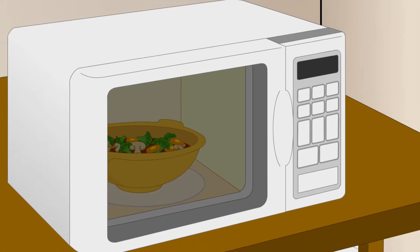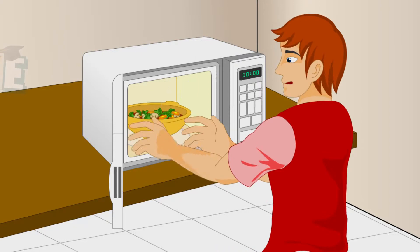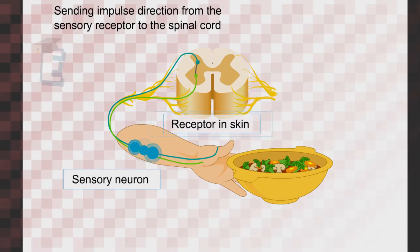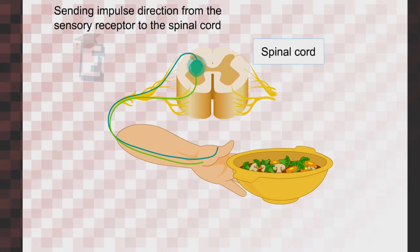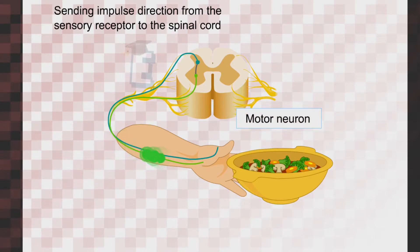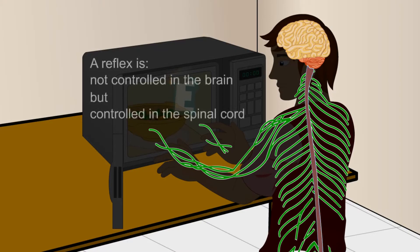A reflex is a response to a stimulus that can endanger the body, such as when you touch an extremely hot pan without using gloves. Sensory receptors on the hand skin immediately respond and send impulses to the spinal cord. The impulse passes to the interneuron in the spinal cord and is immediately relayed to the motor neurons, which then order the muscles in your hand to move. Without thinking, you pull your hand away from the hot pan. A reflex is not controlled in the brain but in the spinal cord.